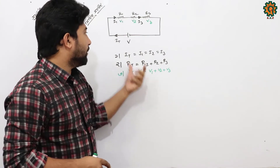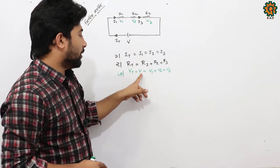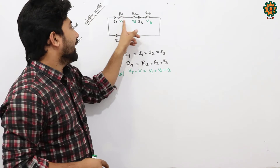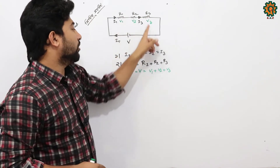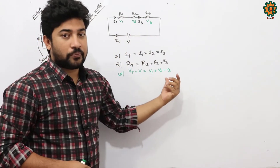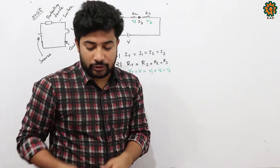This is the total voltage. The total voltage equals V1 plus V2 plus V3. Let's go to the parallel circuit.